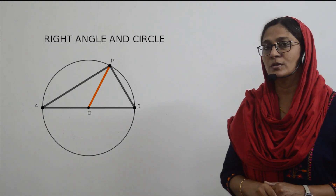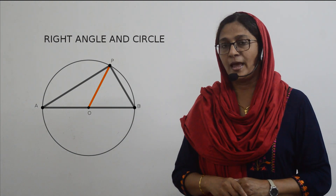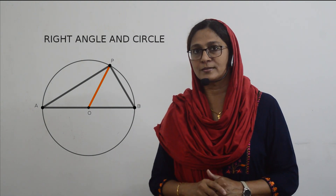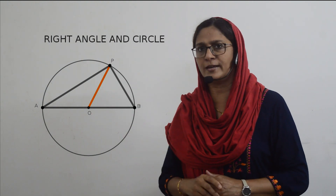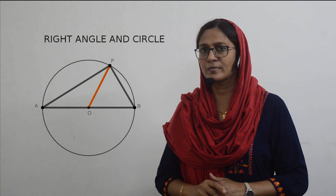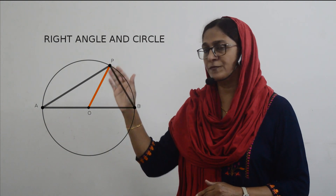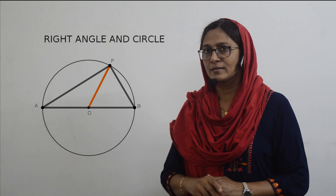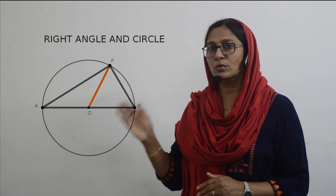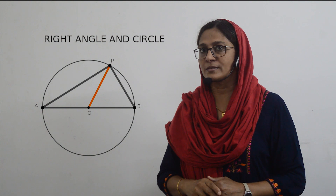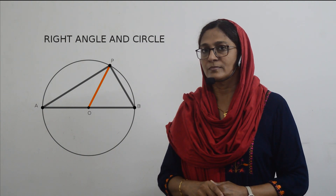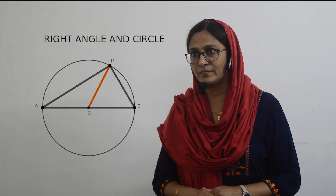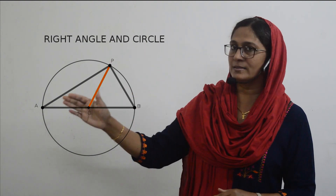Now we get two triangles, and you can see that angle P is split into two angles. Let us consider one of the angles as X and the other as Y. Consider the first small triangle: O to P and O to A are radii, so it is an isosceles triangle, giving us two angles of X.